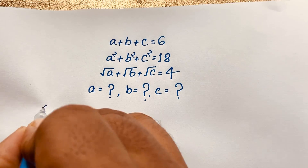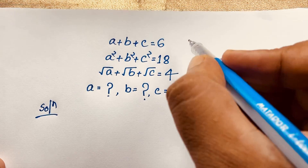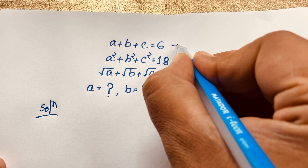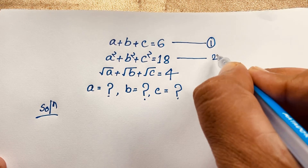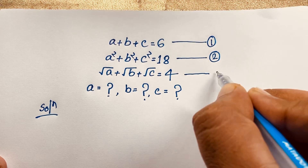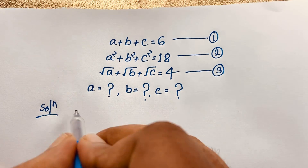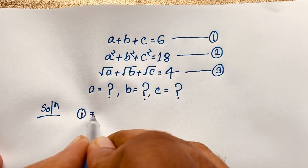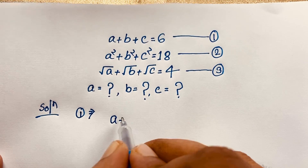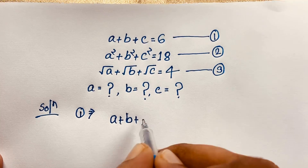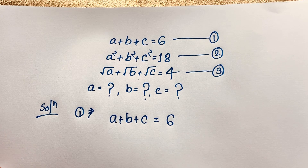So our math solution. First of all, this is our first equation, this is our second equation, and this is our third equation. Now I take our first equation, which is a plus b plus c is equal to 6. This is our first equation.